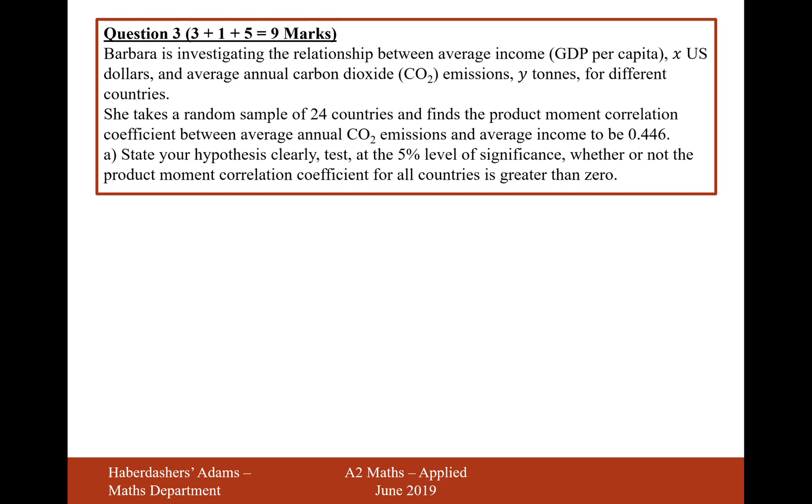She takes a random sample of 24 countries and finds the product moment correlation coefficient between average annual CO2 emissions and average income to be 0.446. State your hypothesis clearly at the 5% significance level, whether or not the product moment correlation coefficient for all countries is greater than zero.